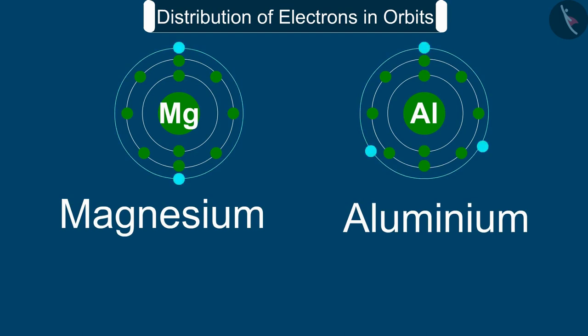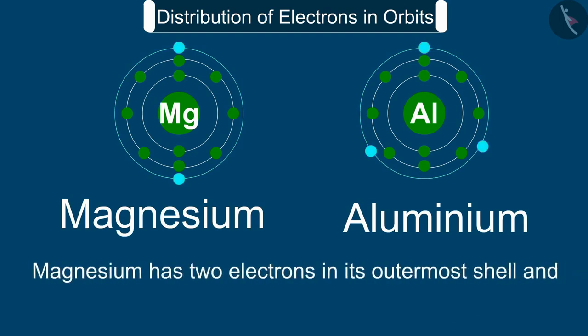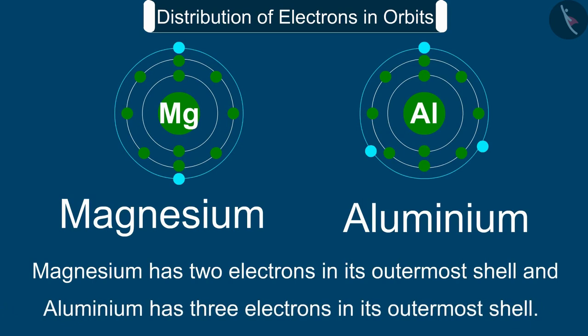Can you tell what is the valency of magnesium and aluminium? Absolutely correct! It is 2 and 3 respectively, because magnesium has 2 electrons in its outermost shell and aluminium has 3 electrons in its outermost shell.